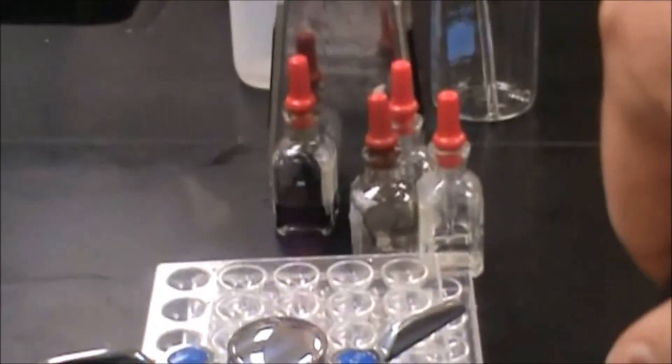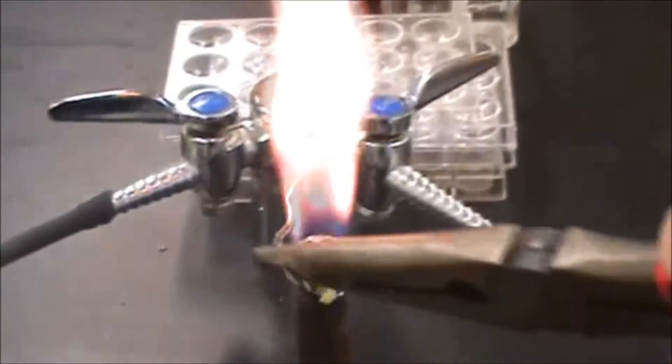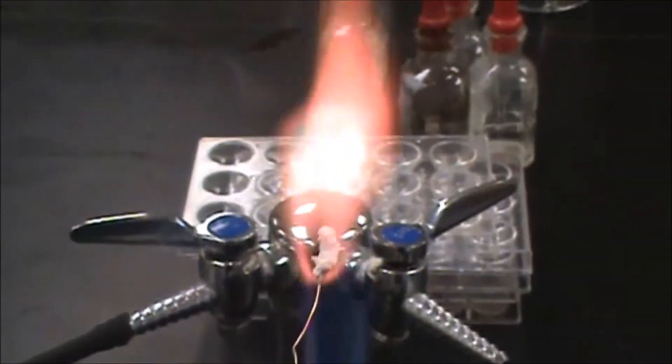Then we're going to take that paper clip and put it into the flame to warm it up a little bit. Then we're going to dip that into the sodium borate, pick up some sodium borate, put that back into the flame. You're going to see a lot of orange color from the sodium.